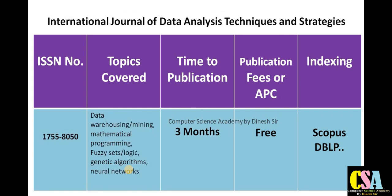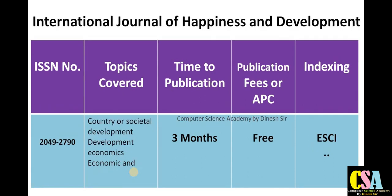Next is the International Journal of Data Analysis Techniques and Strategy, ISSN 1755-8050. Topics covered include data warehousing, data mining, mathematical programming, fuzzy set logic, genetic algorithms, neural networks, and artificial neural networks. This is a quick publication journal — notification within one month, and maximum publication time of three months. There is no publication charge. Indexing includes Scopus and DBLP.